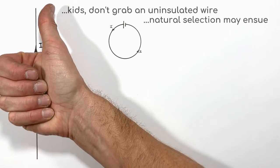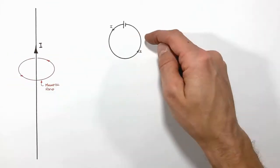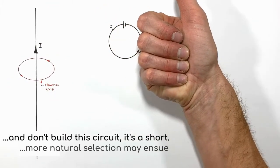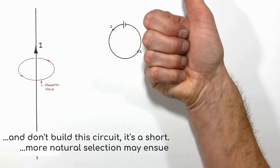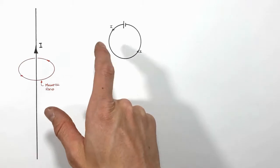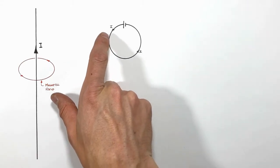Looking at our wire here, if I was to grab this point on the wire right here with my thumb pointed up along that side of the wire, my fingers would curl around the wire like this.